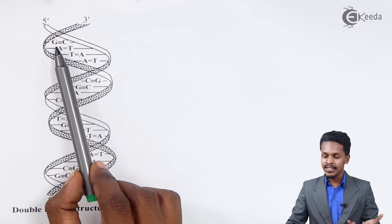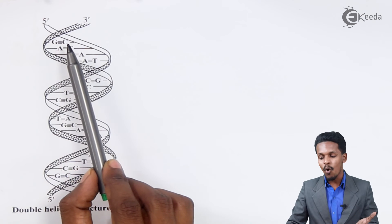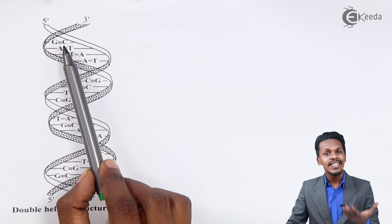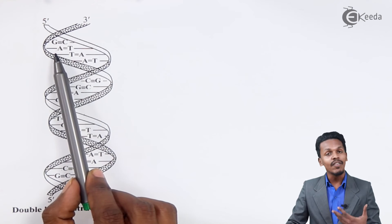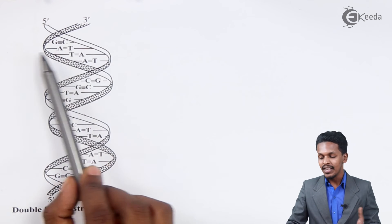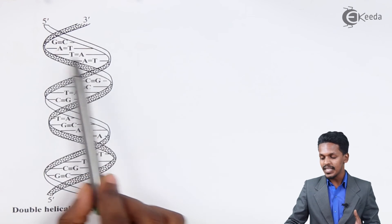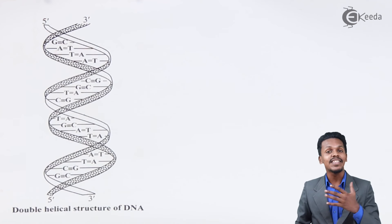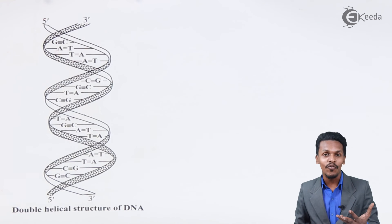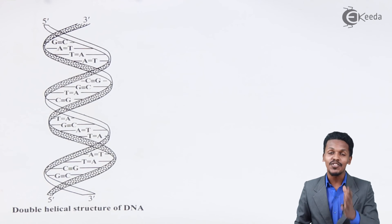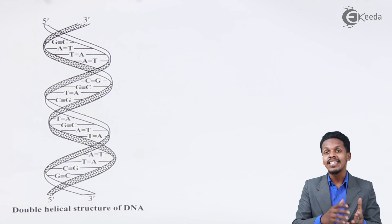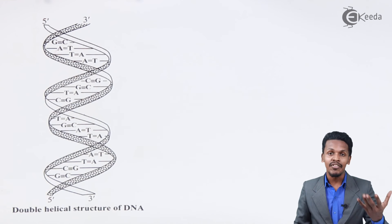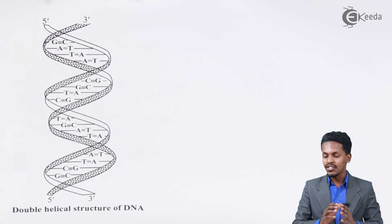Guanine is a base that will form a bond with cytosine only, and adenine will form a bond with thymine. Because of these different combinations, every DNA is comparatively different from other DNA — and that is how we can match and predict whether a particular DNA matches that of another human being or another living being.